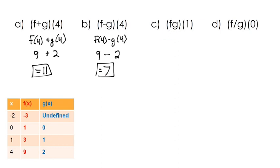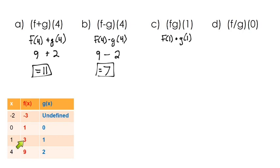For multiplication, we're doing f times g of 1, which is f of 1 times g of 1. We find these two function values and multiply them. Looking at the table when x is 1, the f function has a value of 3 — that's the y value when x is 1. And g of 1 is 1, so multiplying gives us 3.